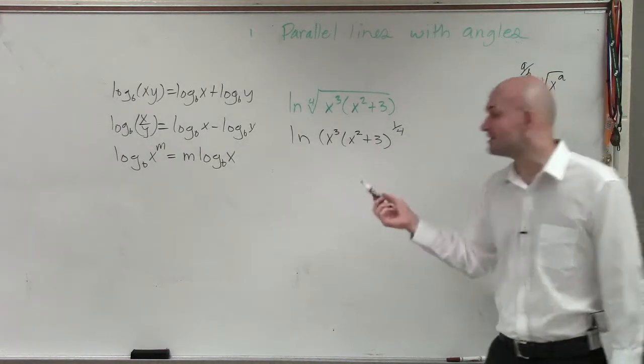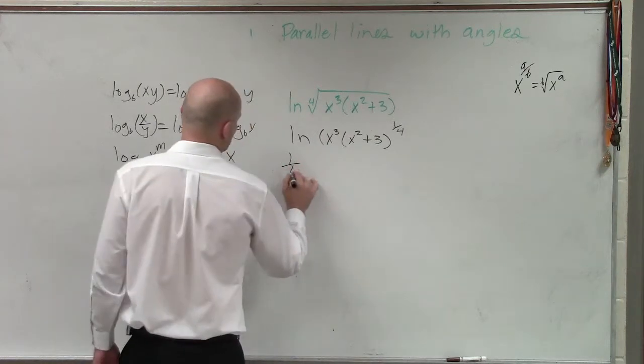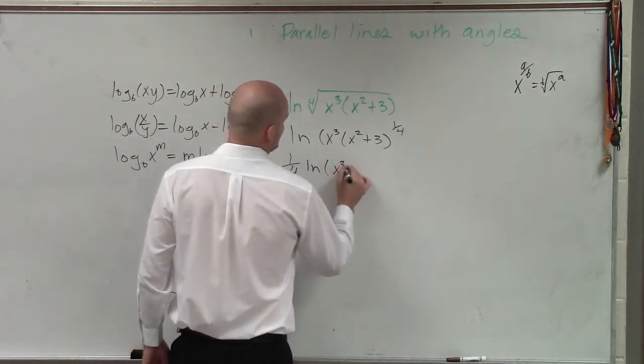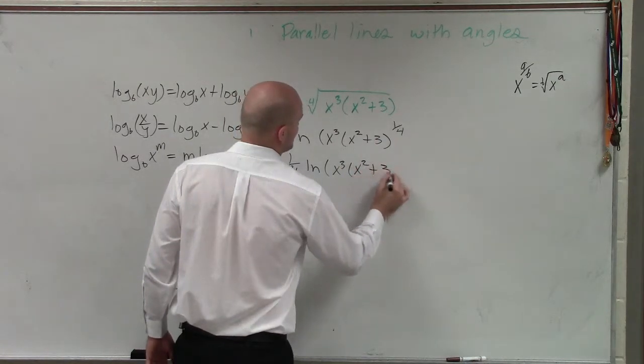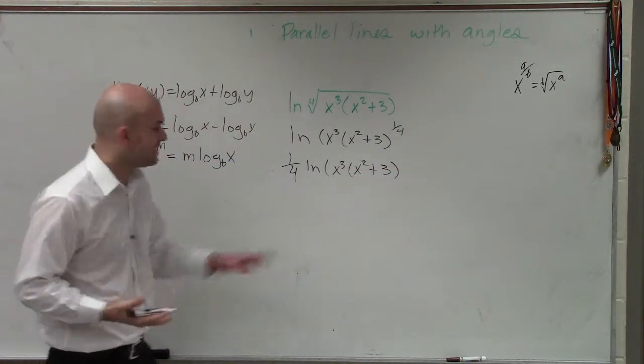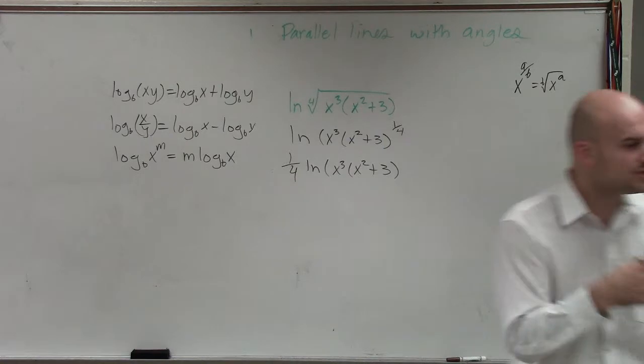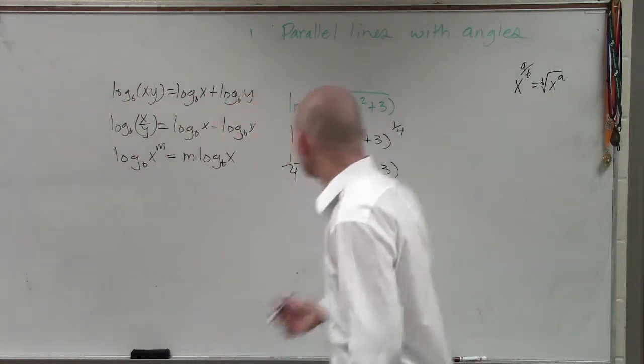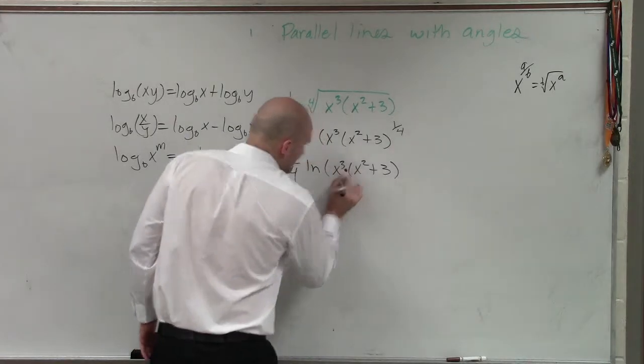All right? So it's up here. Now we can rewrite this down as a product. So I'll have my first one, because I'll use the power rule. So I have one-fourth ln of x cubed times x squared plus 3. Then you understand now that you look at this, you see I have x cubed times an expression x squared plus 3. So we have a product.